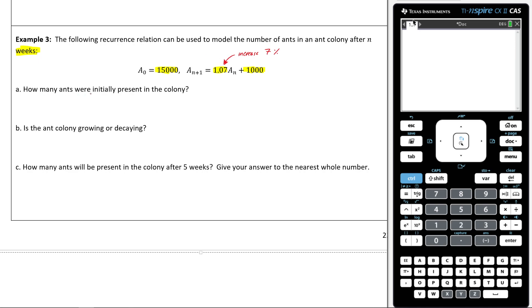Alright, it says, how many ants were initially in the colony? Well, there are 15,000 ants initially in the colony. 15,000 ants.